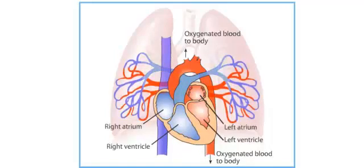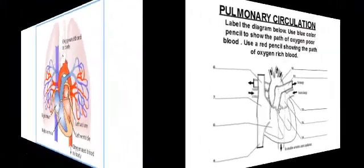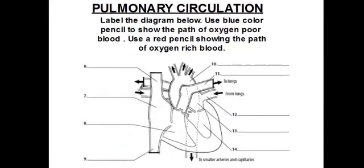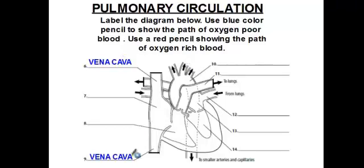So this is what the flow of blood through the heart and the lungs looks like. Now here we have a diagram of the pulmonary circulation pathway. Let's draw arrows to illustrate the movement of blood through the heart and the lungs. Your blood is going to enter the heart through one of two major veins: the superior vena cava, located at the top, which returns blood from the head and neck, and the inferior vena cava, which brings blood back from the lower body. This oxygen-poor blood enters the heart into the first chamber, called the right atrium.